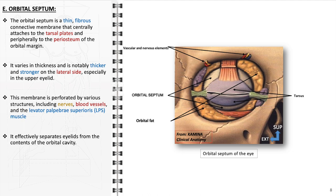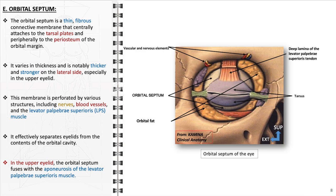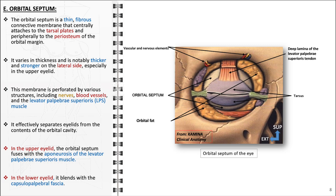One of the key functions of the orbital septum is to act as a barrier, effectively separating the eyelids from the contents of the orbital cavity. This separation is vital in preventing the spread of infections from the external eyelid to the internal orbital structures. In the upper eyelid, the orbital septum fuses with the aponeurosis of the levator palpebri superioris muscle, which is critical for eyelid elevation and proper functioning during blinking. In contrast, in the lower eyelid, the orbital septum blends with the capsulopalpebral fascia, helping to maintain the contour of the lower eyelid.